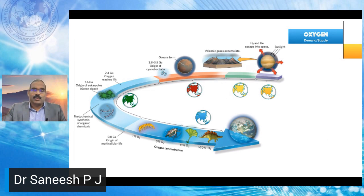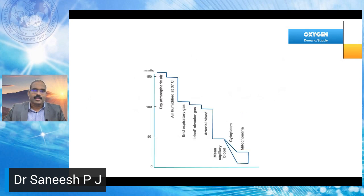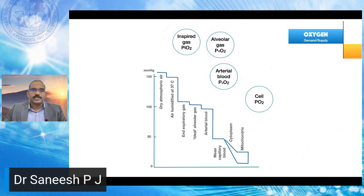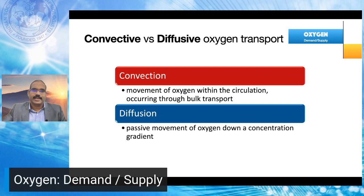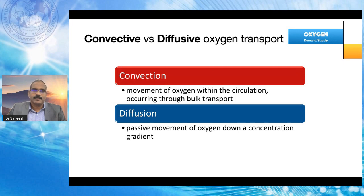We are all breathing in fresh air. The percentage of oxygen evolved over a period of millions of years and reached the present concentration — breathe in, you are breathing in life. We are all familiar with this oxygen cascade: the oxygen tension or partial pressure from the atmosphere rolls down to the arterial blood, into the tissues, and up to the mitochondria. Oxygen transport can occur either by convection — bulk transport within the circulation — or by diffusion, which is the passive movement of oxygen down a concentration gradient.